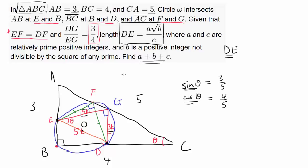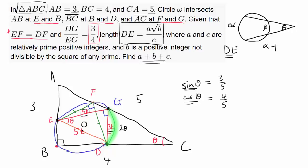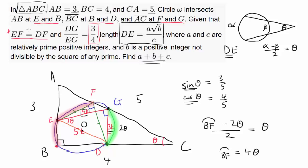Since we have theta noted here, we know arc DG measures 2 times theta. Now, we have two secants going through the circle, and when two secants meet at a point with angles alpha, beta, and zeta, we have (alpha minus beta)/2 = zeta. Using this, the measure of arc BF minus 2θ, all over 2, equals theta. So arc BF equals 2θ + 2θ = 4θ.